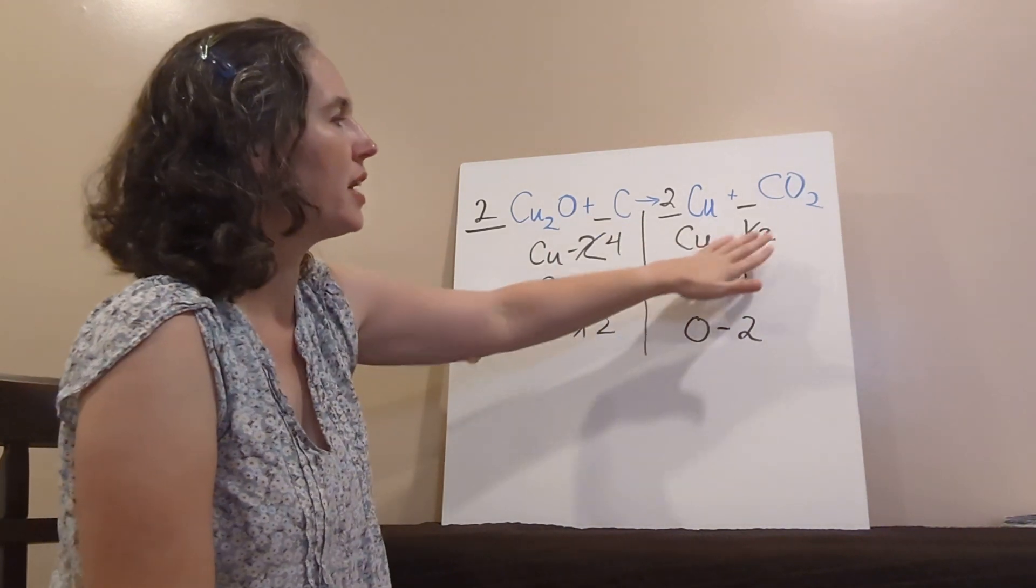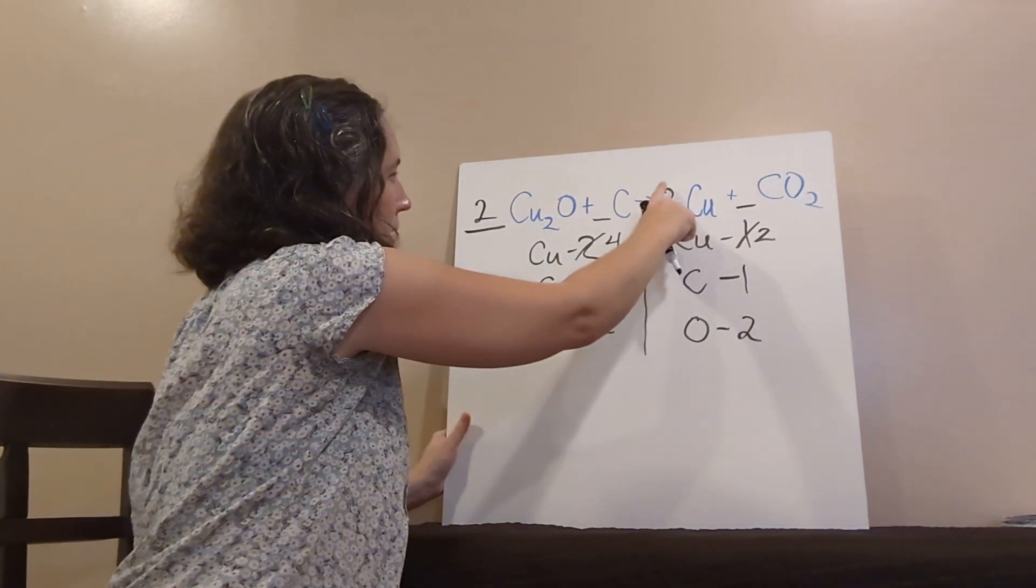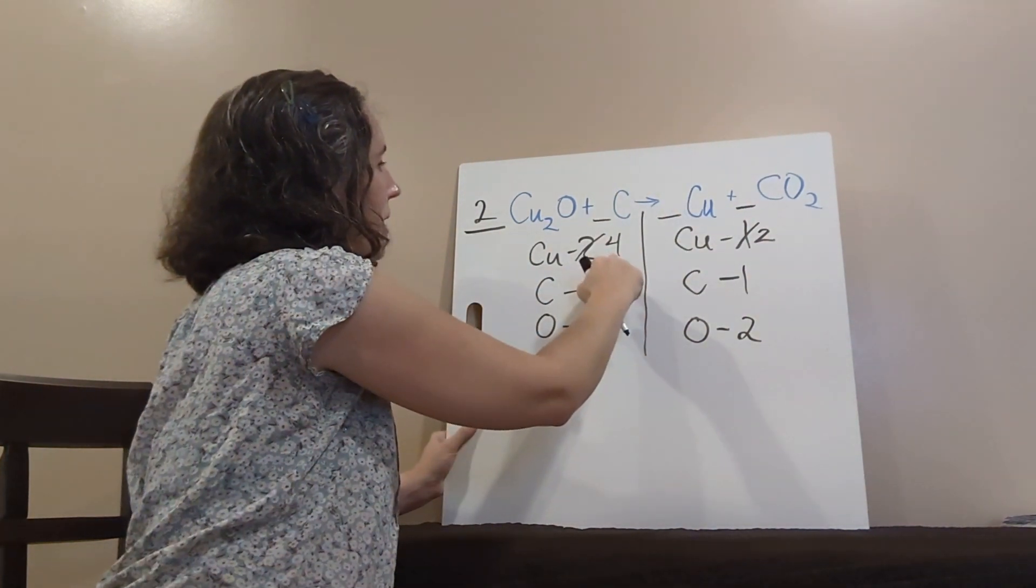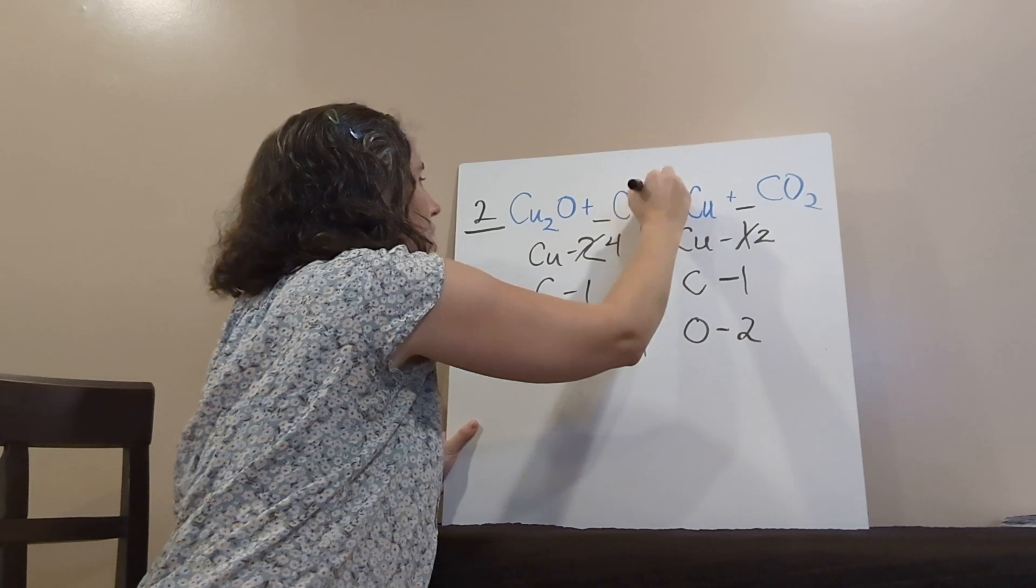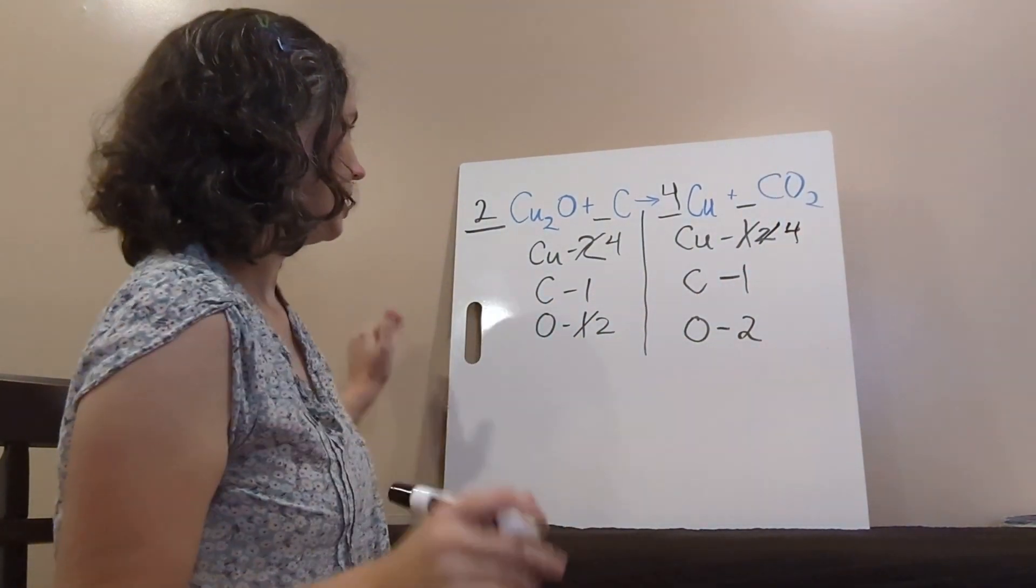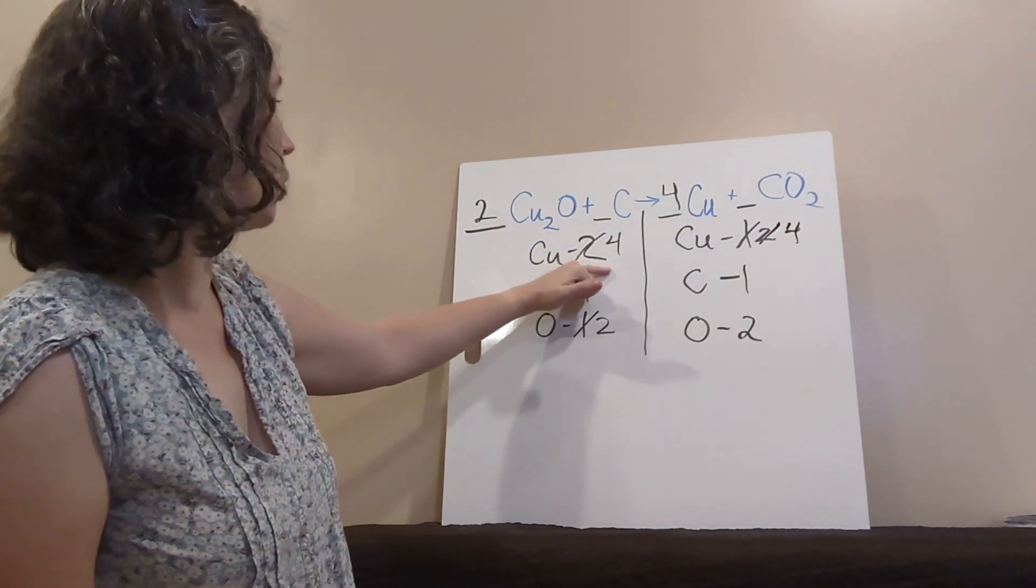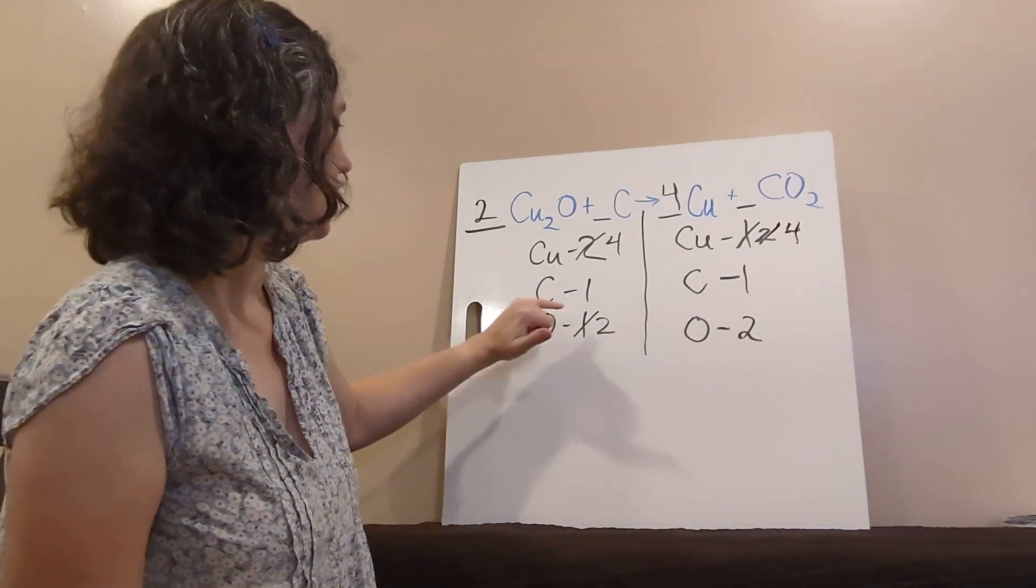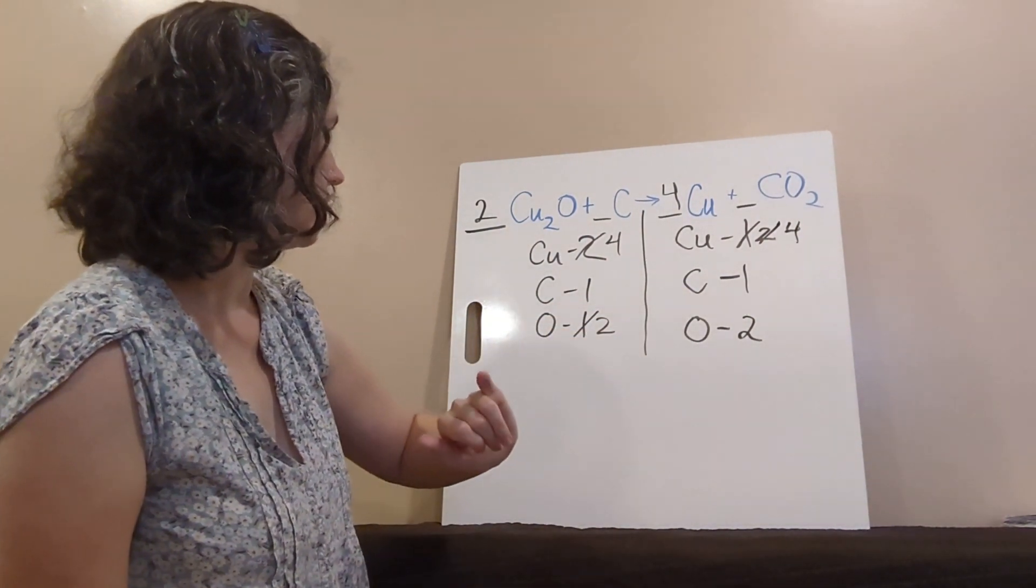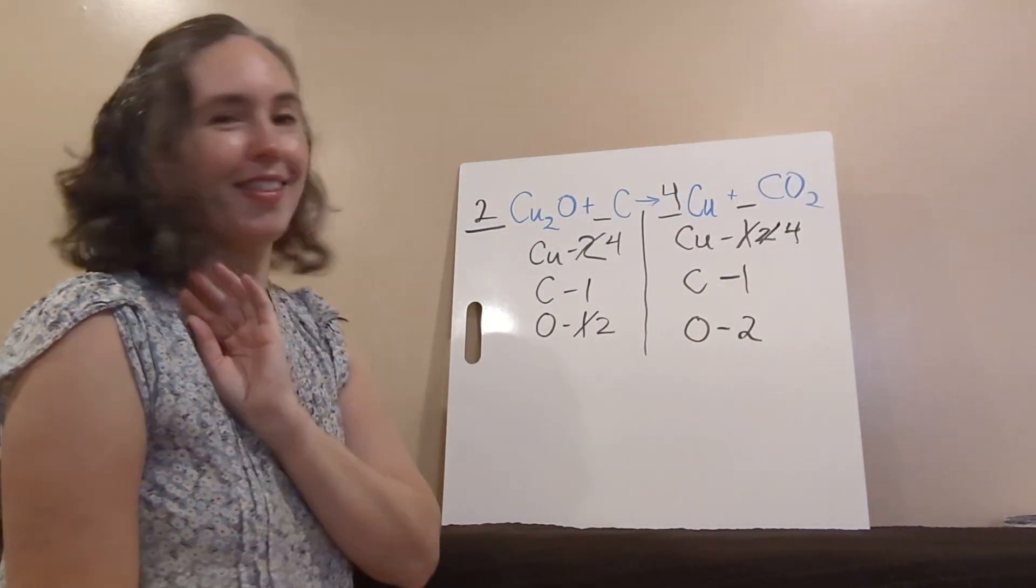So, you don't need to erase all of this. But what you can do is erase the coefficient here and make this four, cross that off, make that four to see am I balanced. I've got four coppers on each side, one carbon on each side, two oxygens on each side. And everything looks good in the equation.